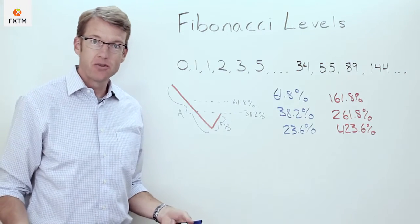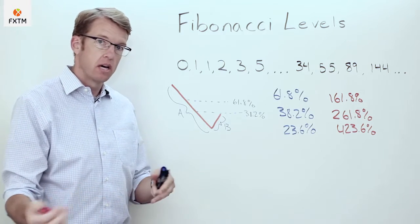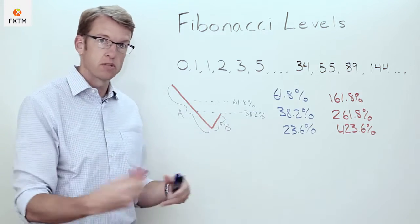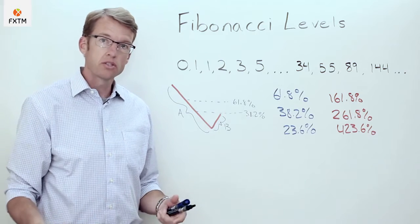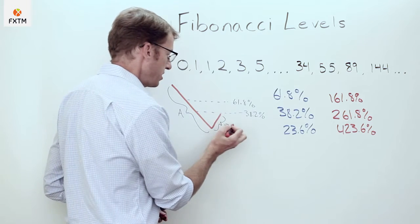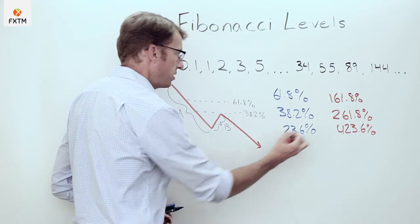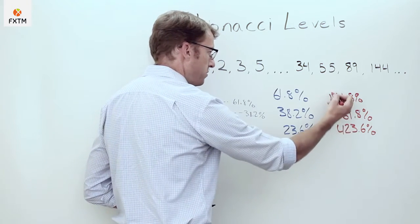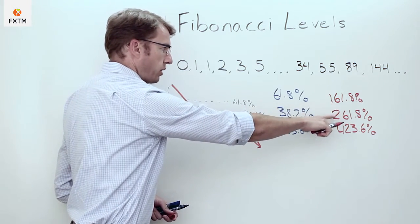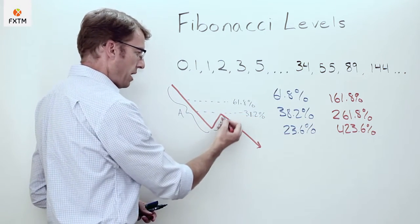How can we use Fibonacci ratios to estimate how far a trend is likely to extend once it has corrected or retraced, assuming it breaks its former support or resistance level? We can use these Fibonacci ratios again. If B stopped at 38.2% and the price continues to the downside, an investor can evaluate setting take profit levels at 161.8%, 261.8%, or 423.6% of the amount of the retracement.